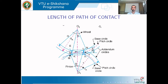Now let's discuss the length of path of contact. The path of contact is the point traced from the beginning of engagement to the end of engagement. The length of path of contact is the line which is normal to the point of contact, and that line is intersected by the addendum circle of both the gears.